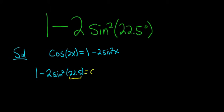This is equal to cosine of 2x, so 2 times 22.5. 2 times 22.5 is 45 degrees.